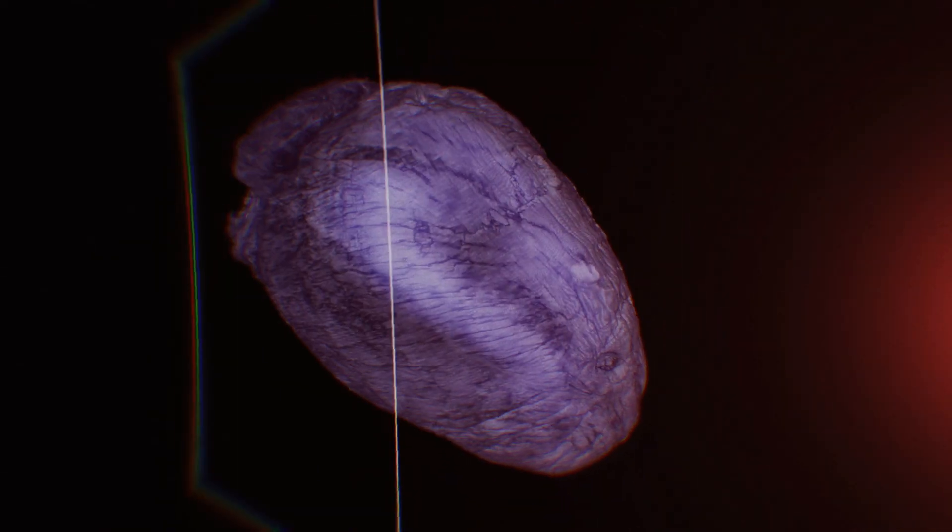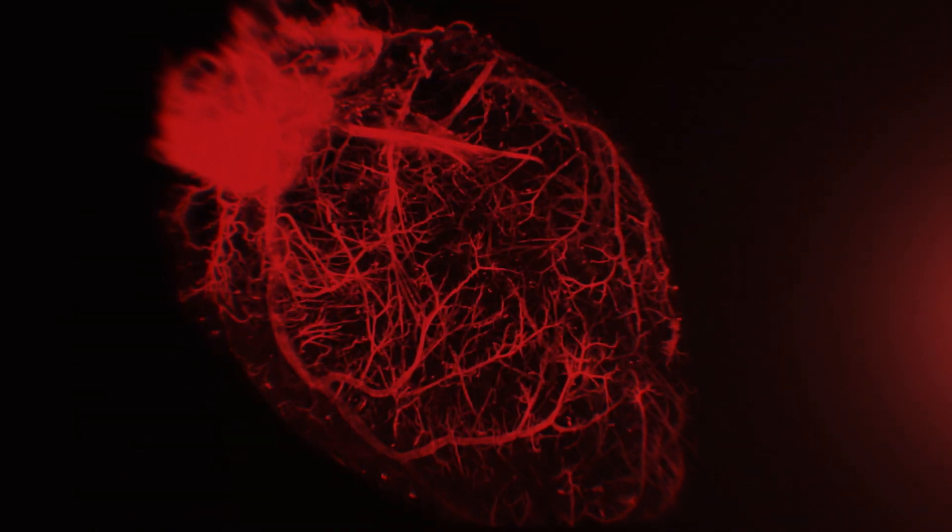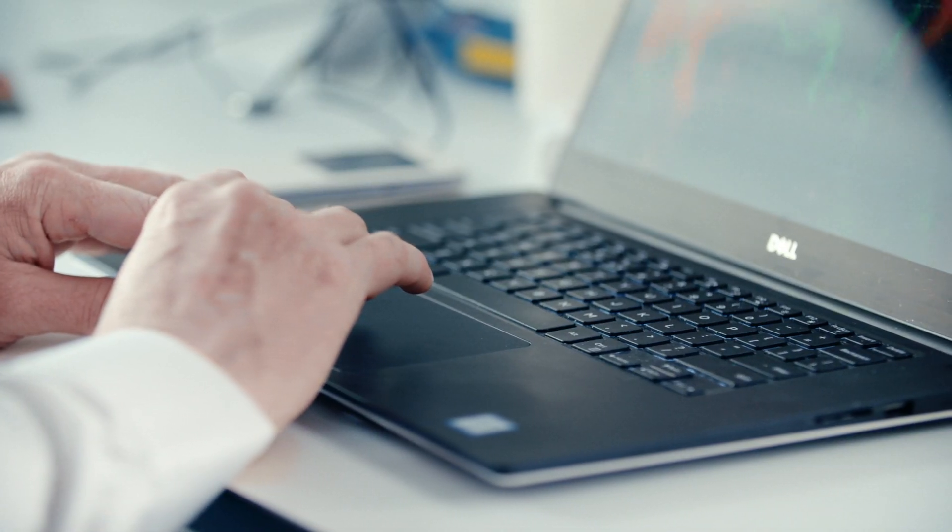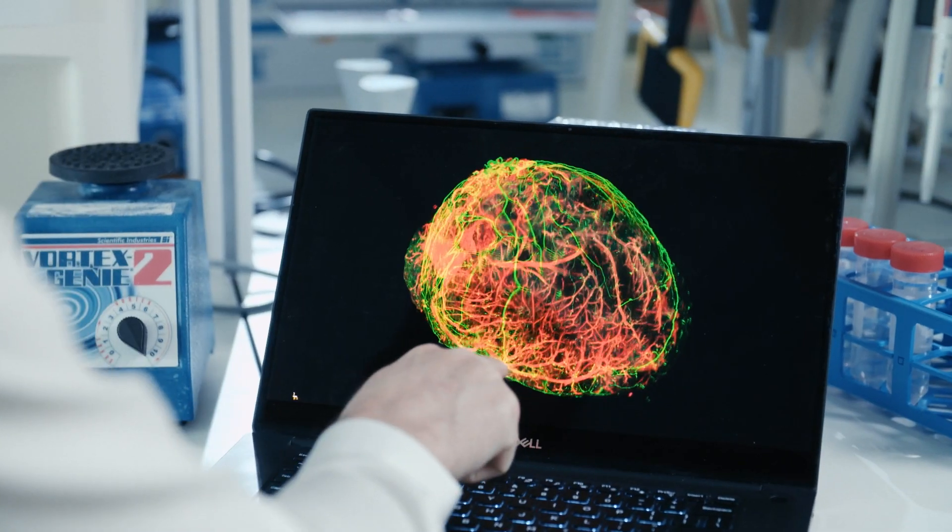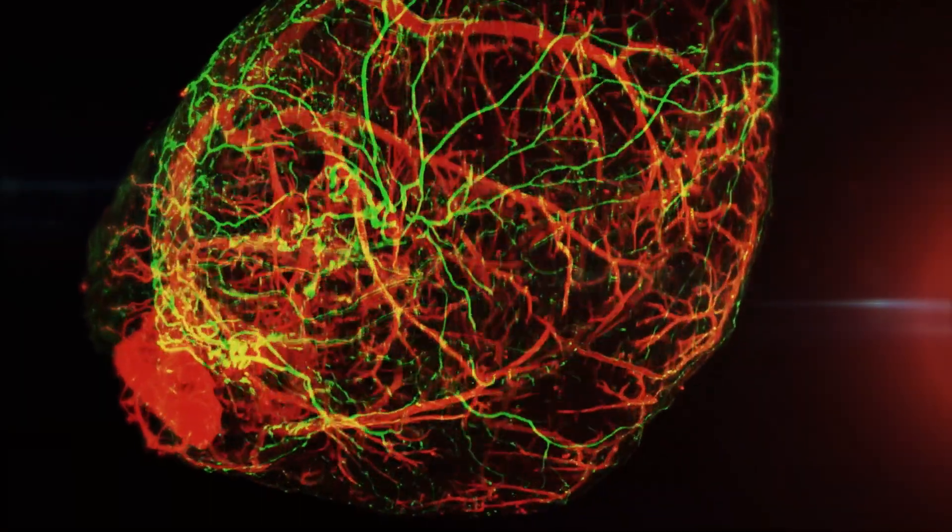The ability to visualize in three dimensions how the arterial tree interacts with cells and molecules helps us imagine novel aspects of its function. Perhaps there are aspects that were overlooked that now become apparent in three dimensions. For example, the arterial tree in the heart is closely intertwined with a network of nerves, and the potential interactions between the blood vessels and the nerves is a relationship that requires much further exploration.